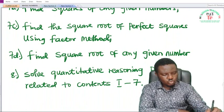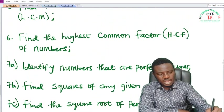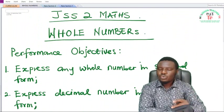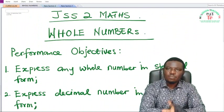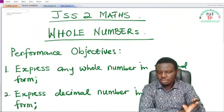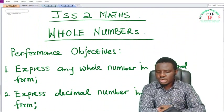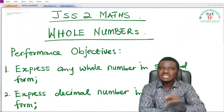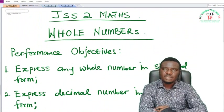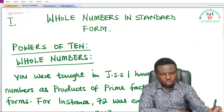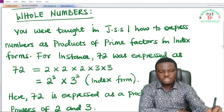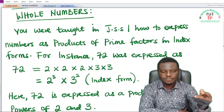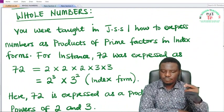Eight, you should be able to solve quantitative reasoning problems related to content one to seven. So we have a lot to do under whole numbers in GSS2 and we shall be taking them one objective at a time. First we shall look at how to express any whole number in standard form. Now under whole numbers, you were taught in GSS1 how to express numbers as products of prime factors in index form.